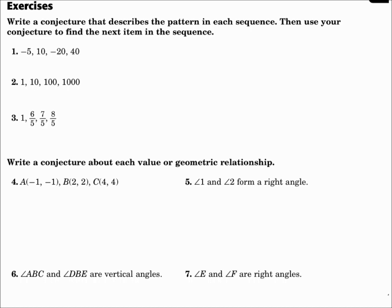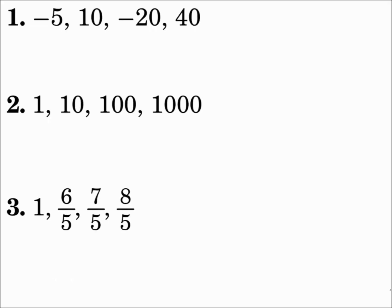Write a conjecture that describes the pattern in each sequence, then use your conjecture to find the next item. When you do series of numbers, look for patterns that are multiplied or added and see which one fits. From negative 5 to 10 to negative 20 to 40, you're multiplying by negative 2 each time. So the next number would be negative 80.